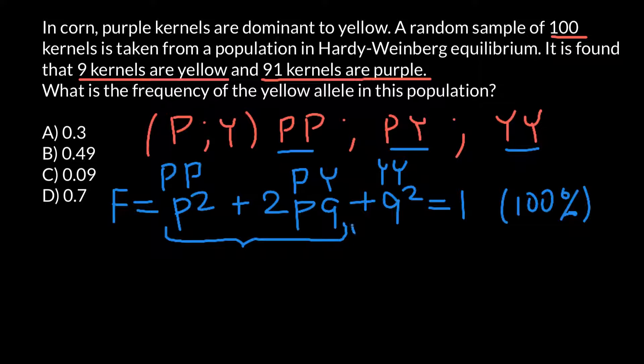Now Q squared would stand for the YY genotype. So basically, we have here three genotypes but only two phenotypes, because this genotype PY is the same phenotype as PP.